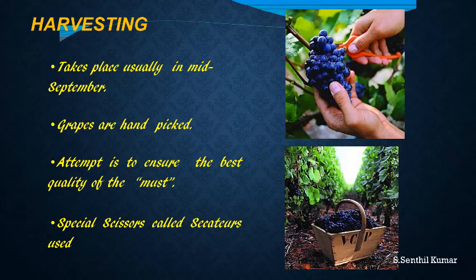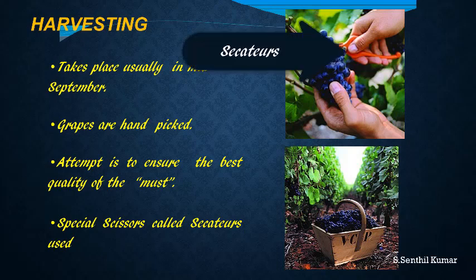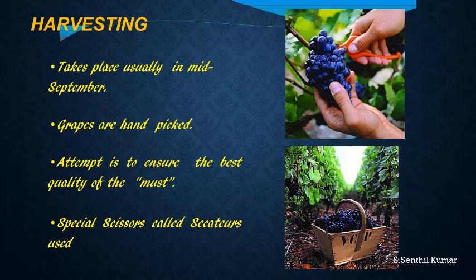Most vineyards use the manual method for harvesting. The mechanical method will damage the grape quality, so most vineyards use the manual method for plucking the grapes. Special scissors are used, called secateurs. Before harvesting, the vineyard members will double-check the grapes for ripeness and quality.